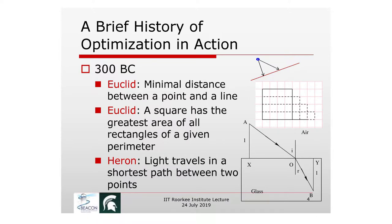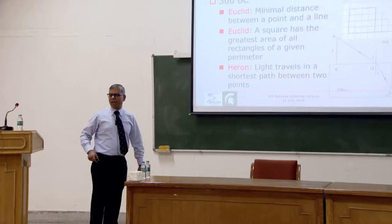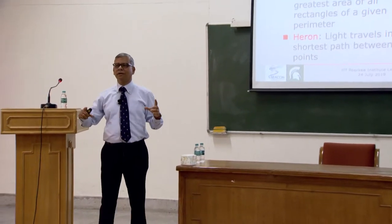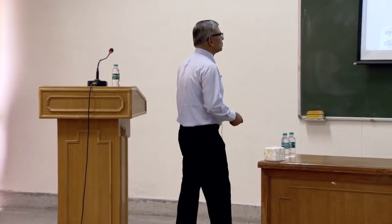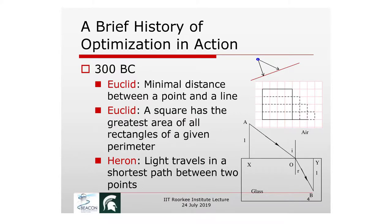Heron proposed that light travels via the shortest path — you can figure out the shortest path and observe that it follows what we now call Fermat's principle. If you measure the angles, you'll see it conforms to that principle. These historical examples show that minimization and shortest-path ideas have ancient roots.